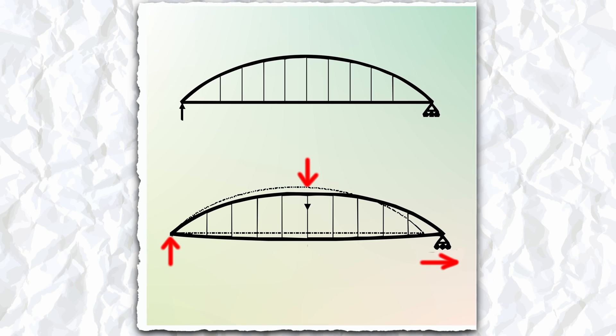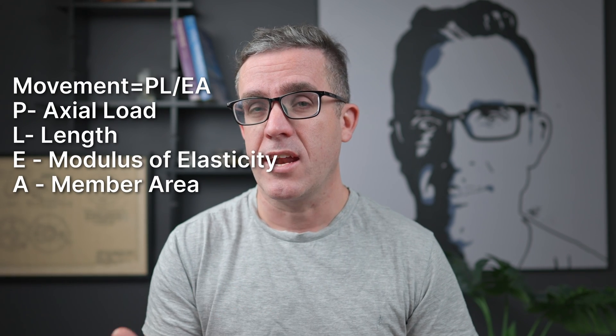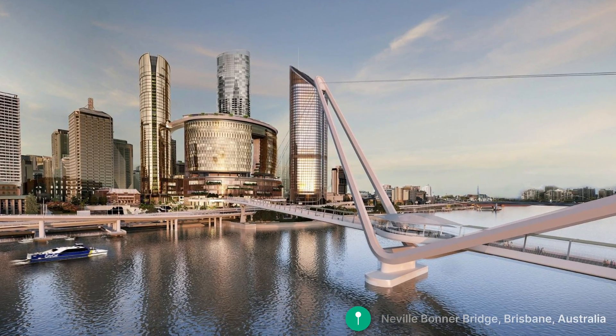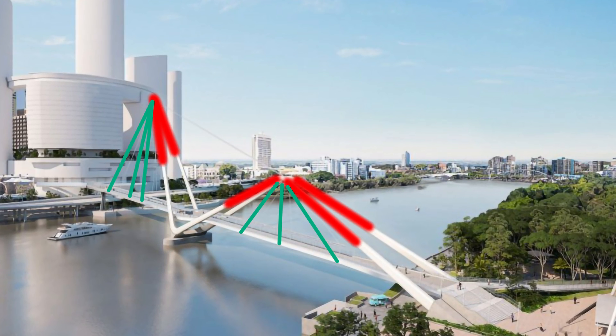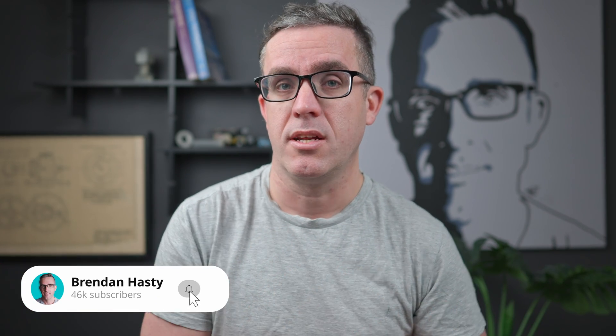Sometimes you do need to think about how much elongation you're going to get and how that can affect the bridge — it's just PL over EA, the extension — making sure you're tightening it up so that when it gets loaded it doesn't have negative effects on your structure. Looking at a project like the Queen's Wharf Neville Bonnell Bridge, the scheming of such a structure can seem quite simple: you've got tension going up and compression members, but you're transferring the load in tension as much as possible rather than bending, as it's more efficient that way.